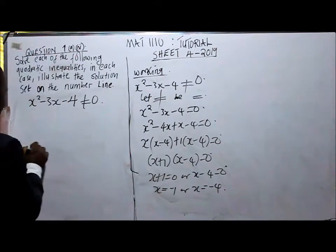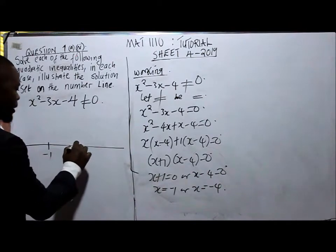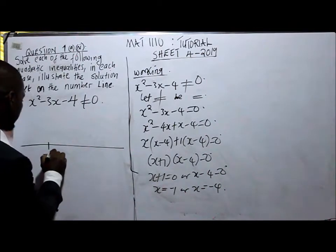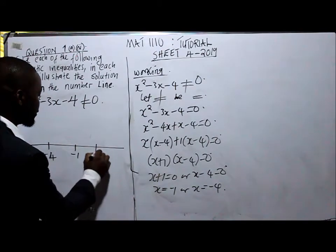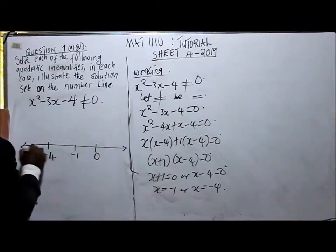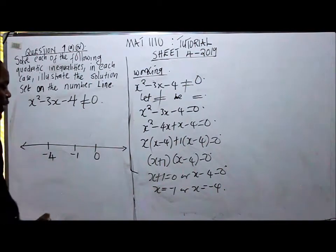So when you draw a number line like this, we have got -4, -1, 0, and then positive numbers on this side. Now these are the values of x we have calculated.